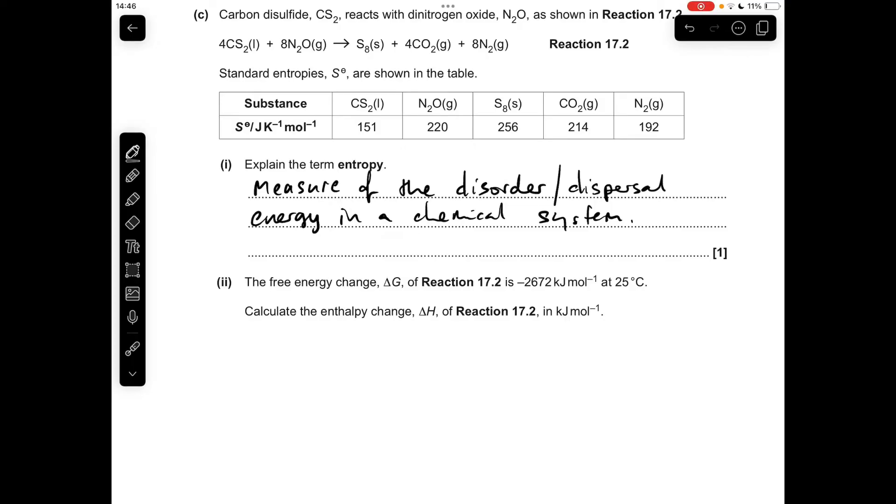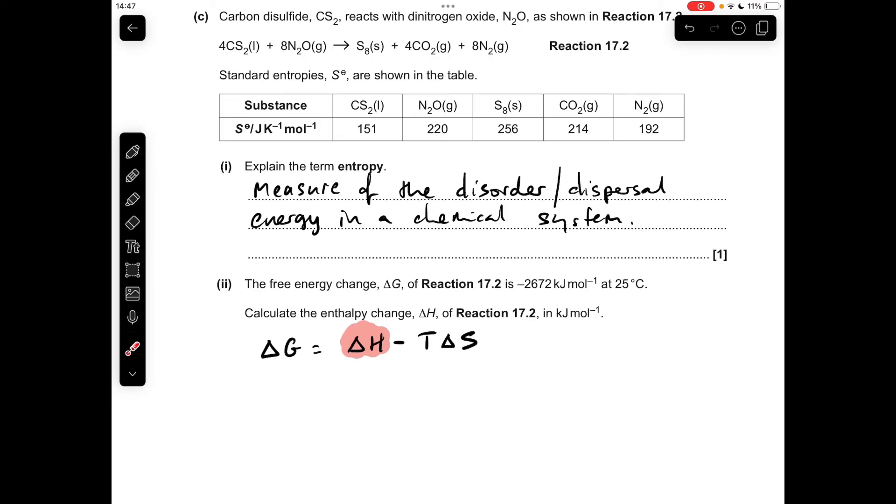Moving on to the calculation, we've got to calculate ΔH for this reaction, so it's all based on the Gibbs equation: ΔG = ΔH - TΔS. So we'll just rearrange for ΔH, so there's that there. We've got ΔG there, it is there.